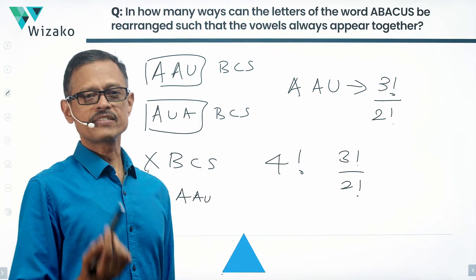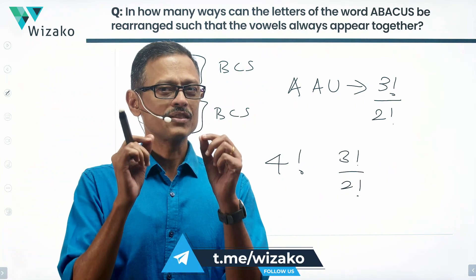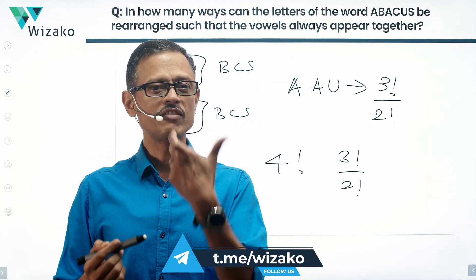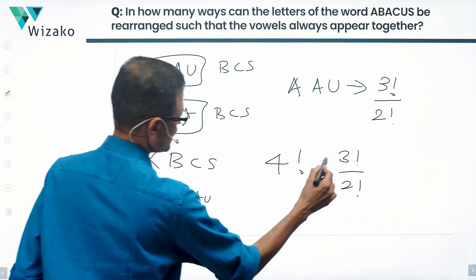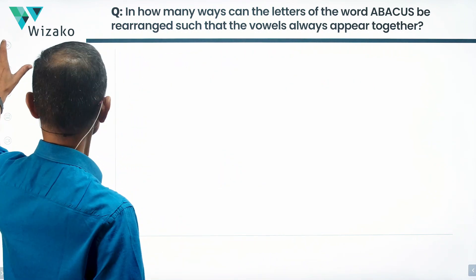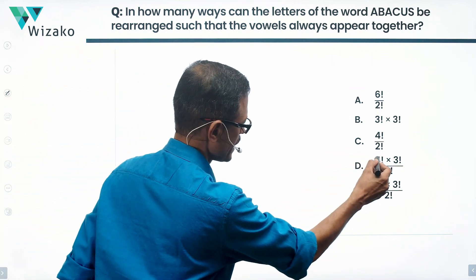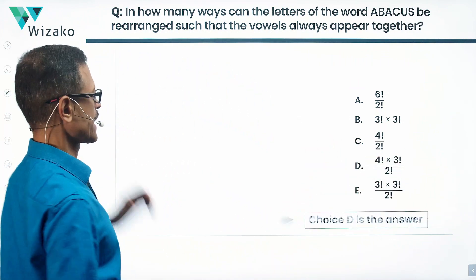So total number of ways in which the letters of the word ABACUS can be reordered such that the vowels appear together is going to be four factorial times three factorial upon two factorial. Take a look at the answer options - which one basically matches four factorial times three factorial upon two factorial? Choice D is the correct answer to this question.